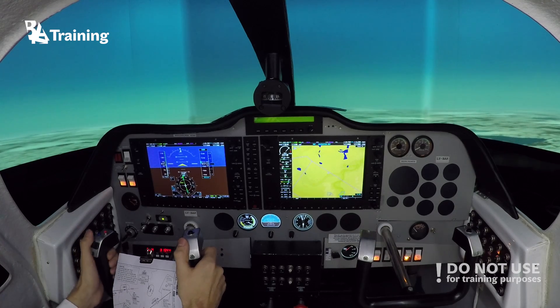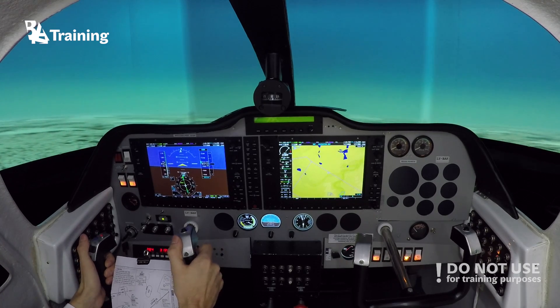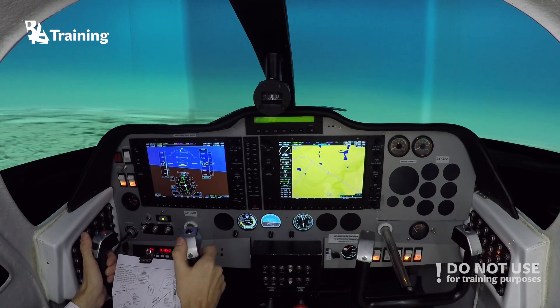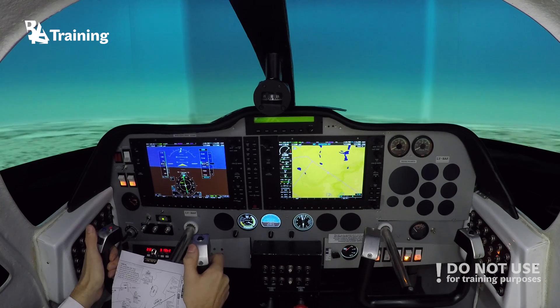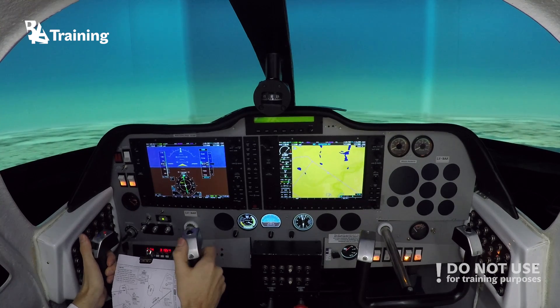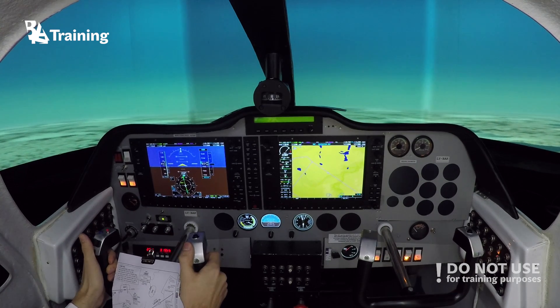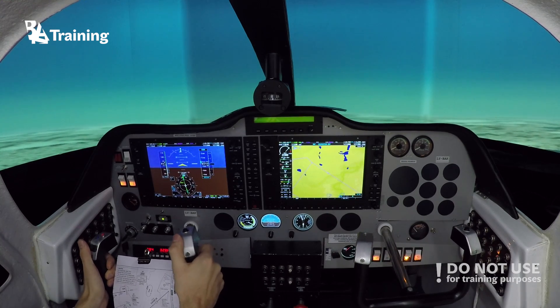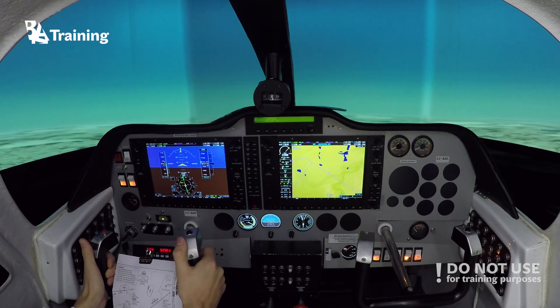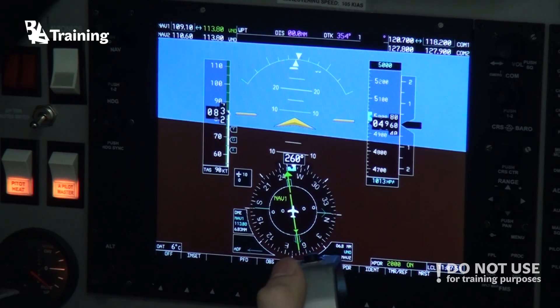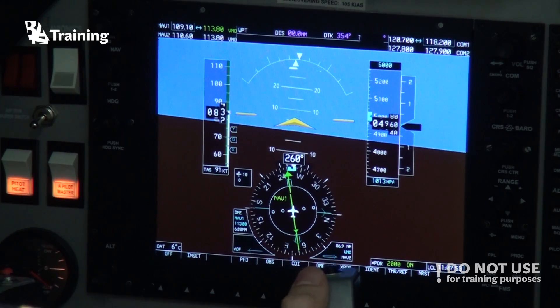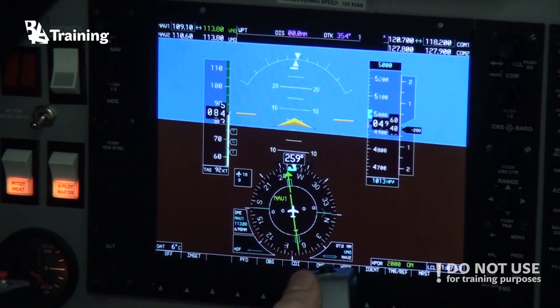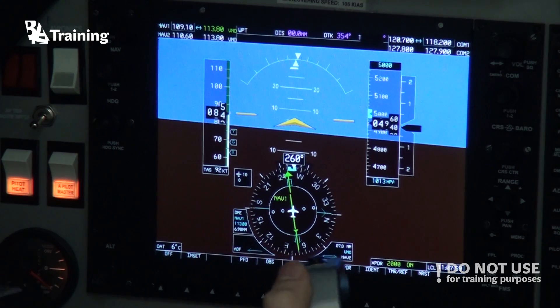And for the outbound leg we have no DME, so it will be flown with the help of timing. One minute because under flight level 140 we should use one minute on the outbound leg and not above 230 knots. If we are above flight level 140 we should use one minute and a half and 240 knots as maximum airspeed.